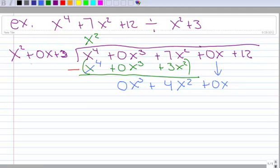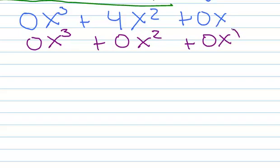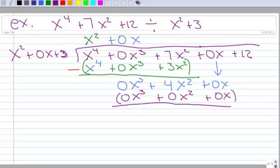So, we have 0x cubed divided by x squared. So, that's going to be a 0. So, plus 0x. Let's multiply that out. 0x times x squared is 0x cubed. 0x times 0x is going to be 0x squared. 0x times 3 is 0x. Subtract that.